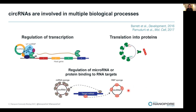From many studies conducted in the last few years, it is now known that circular RNAs are abundant in mammalian transcriptomes. They play roles in multiple biological processes such as regulation of transcription, translation into protein products, and also regulation of microRNA or protein binding to RNA targets. If you think about those different biological functions of circular RNAs, it becomes apparent that to study their functions, we actually need to know their full-length sequences.